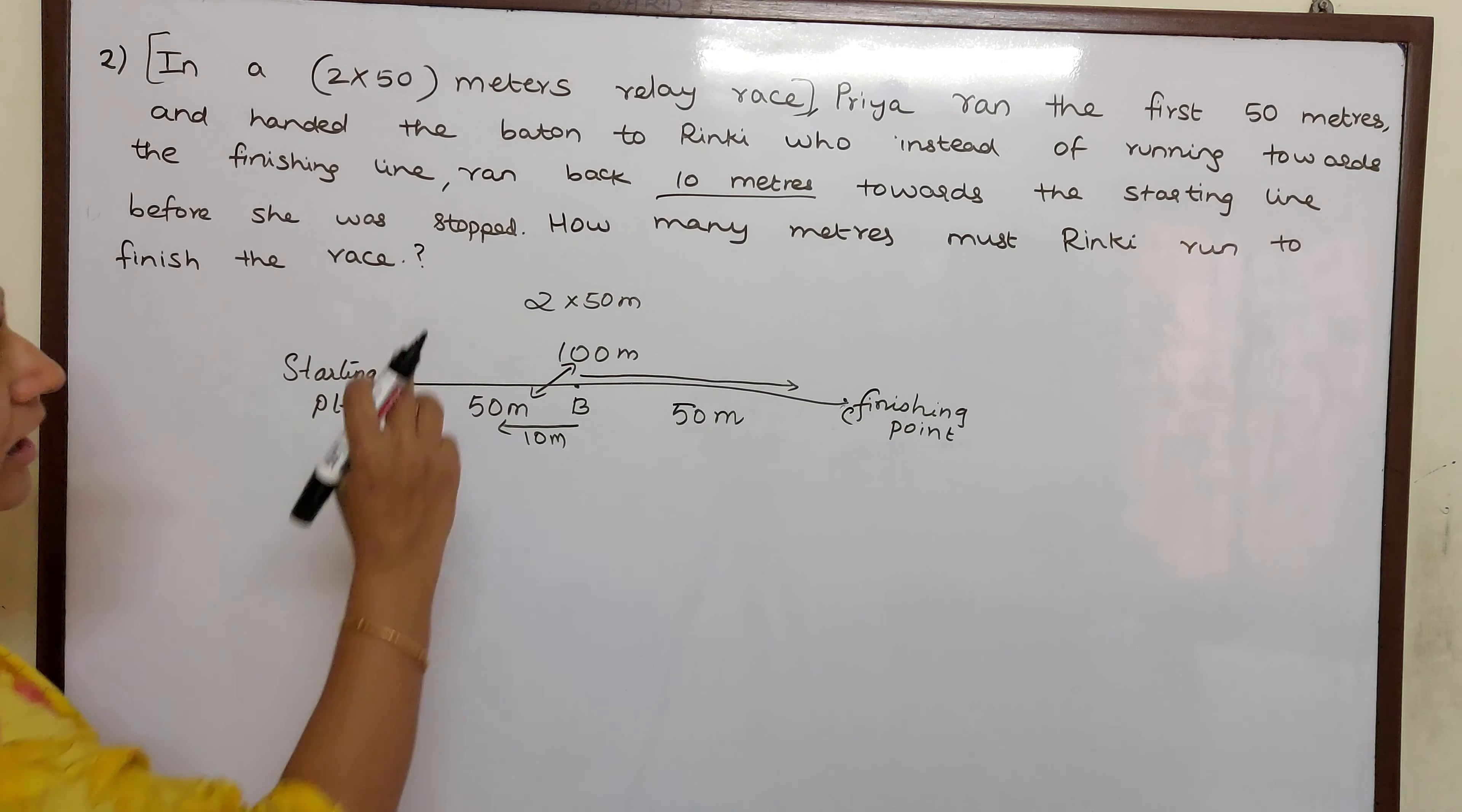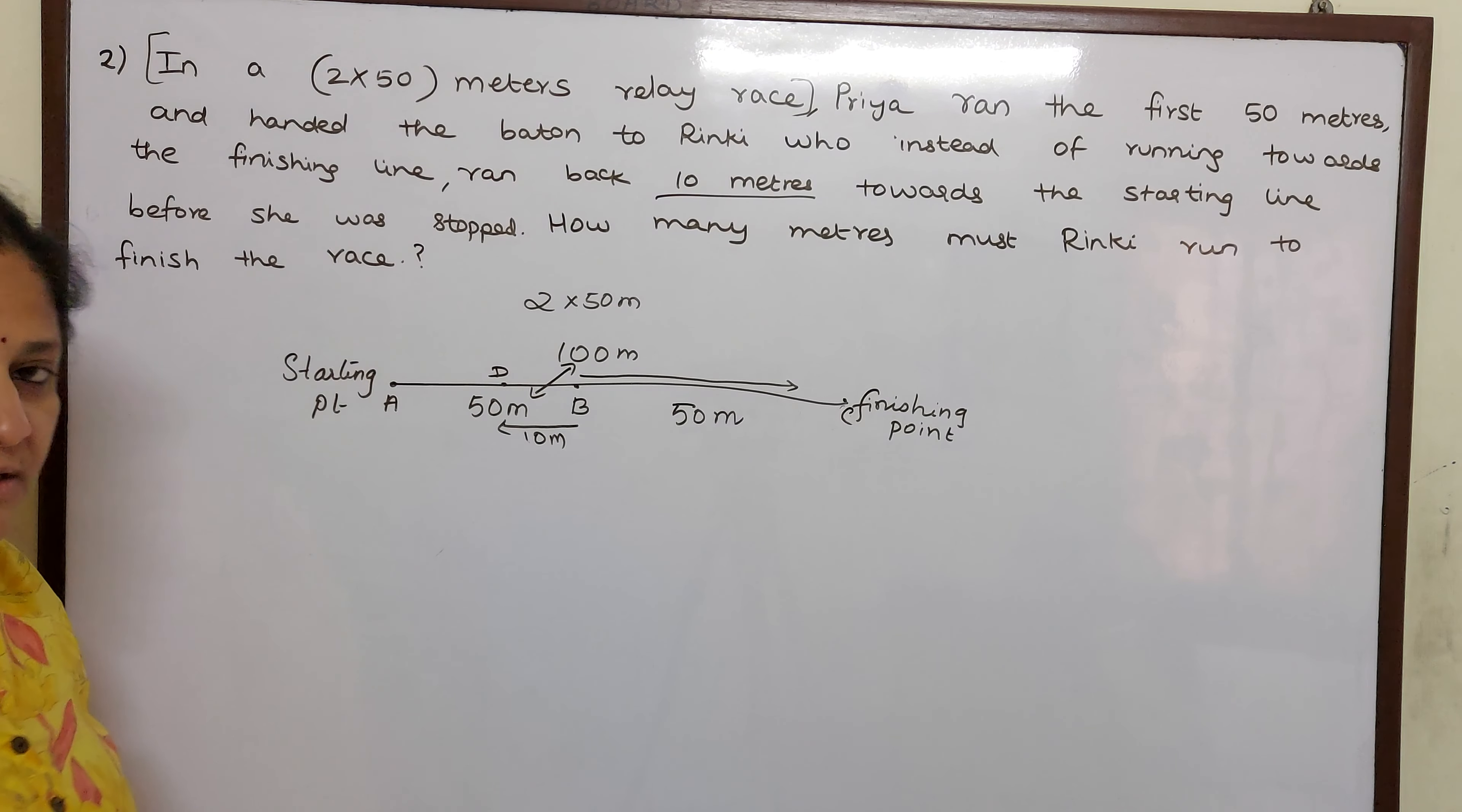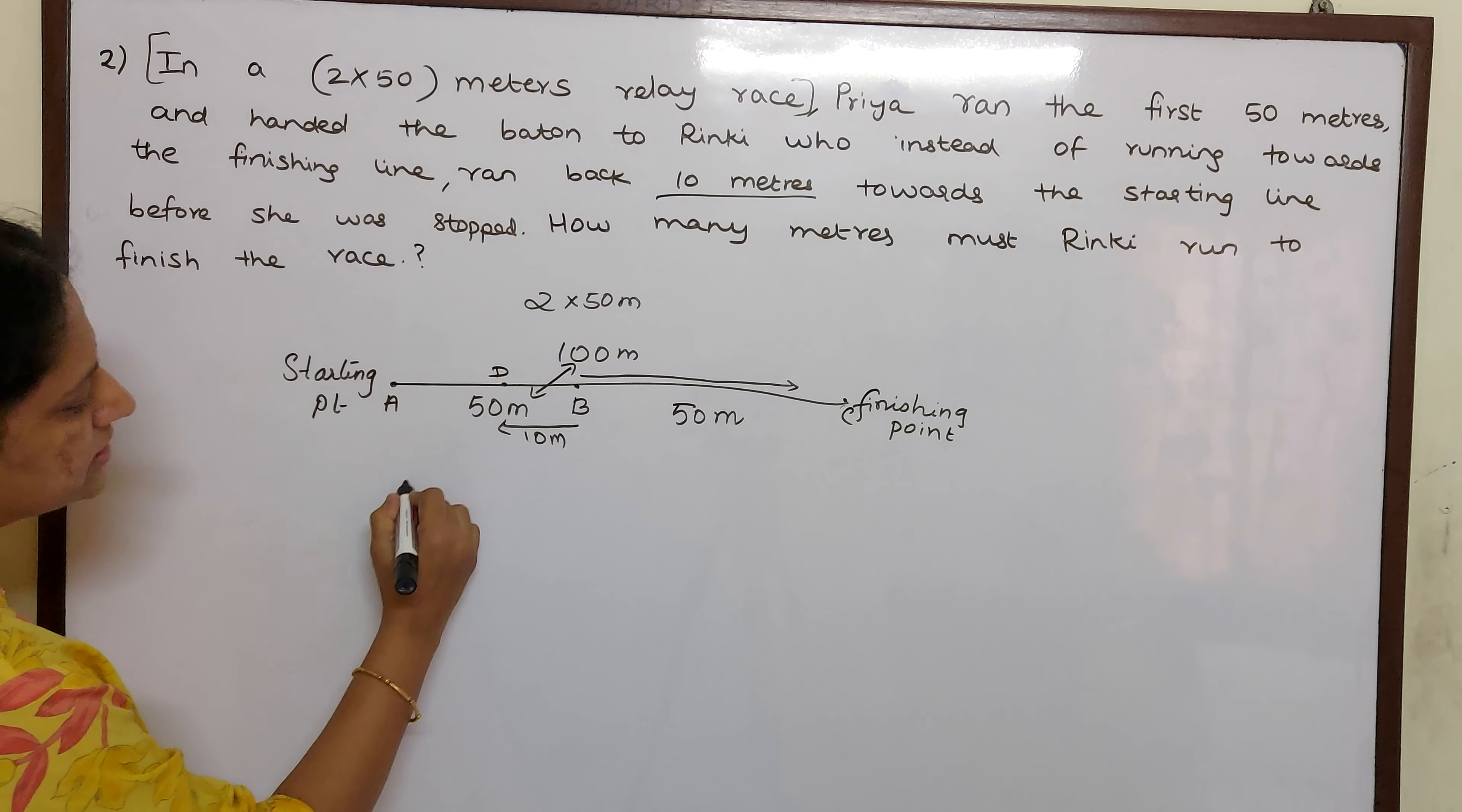Now how many meters must Rinky run to finish the race? That means Rinky has to start running from this point. So let us assume this D. So from here, she has to finish the running race till C. Now what is the distance between DC? So let us see.